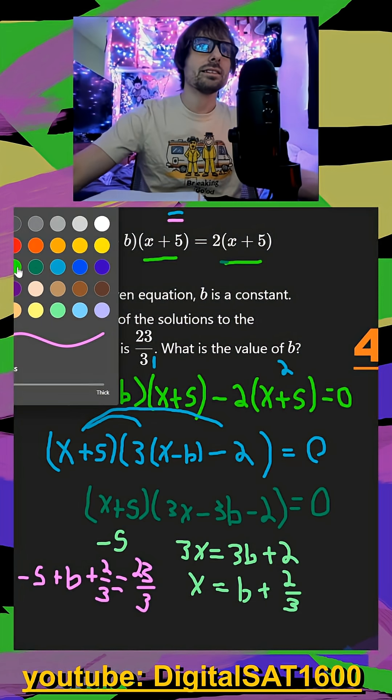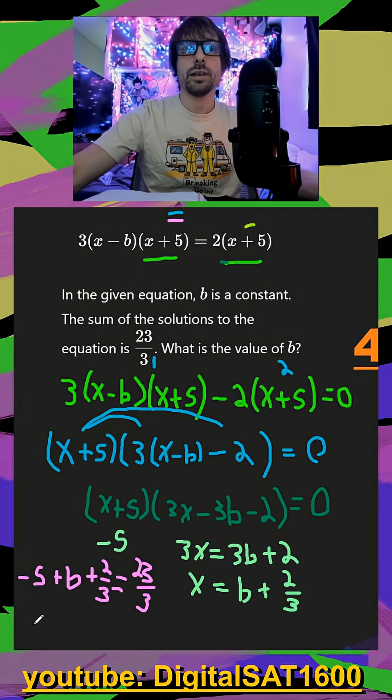So to make this easy, we could just multiply everything by three. So we would have negative 15 plus three b plus two is equal to 23.